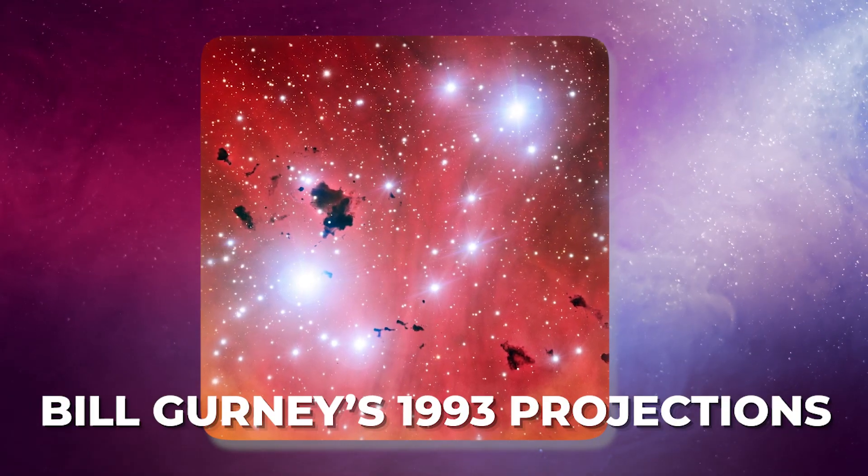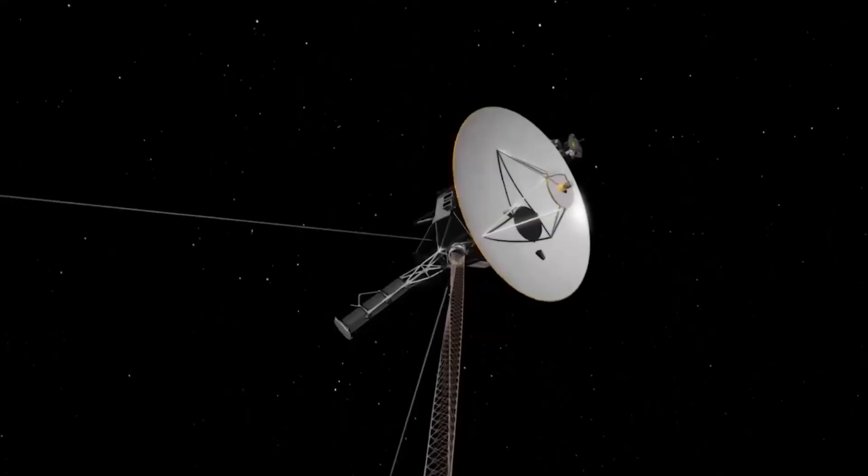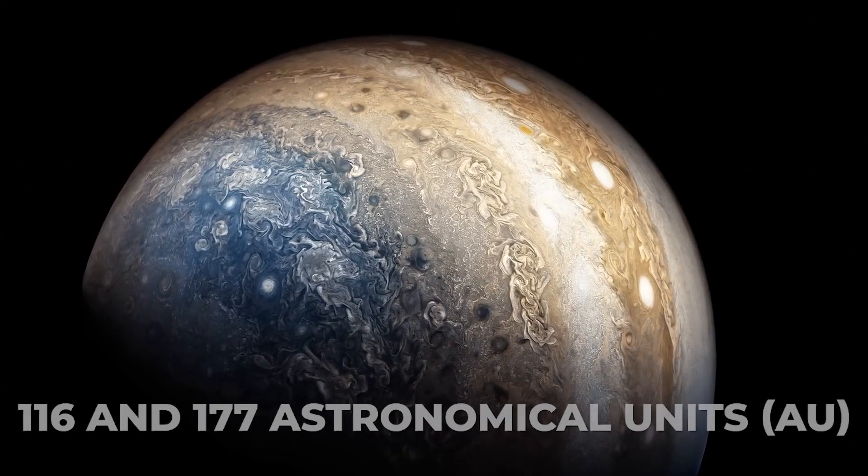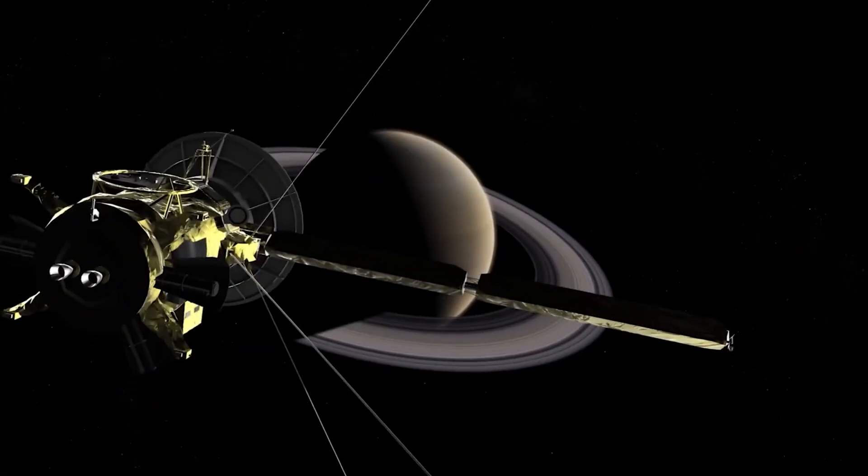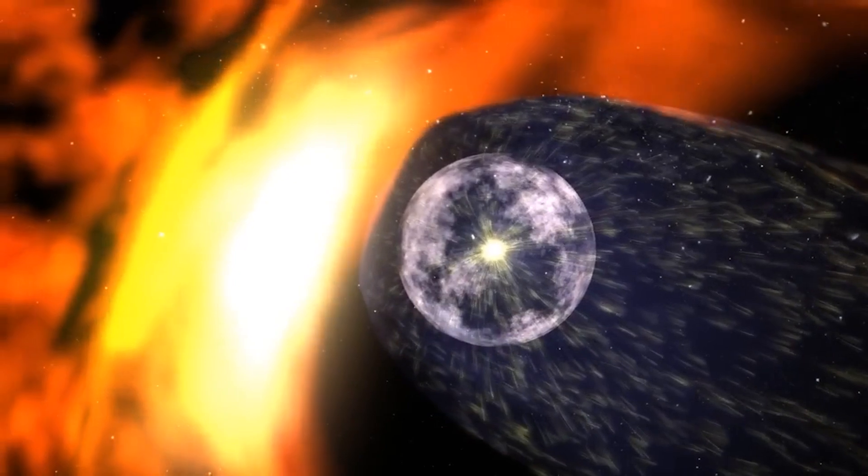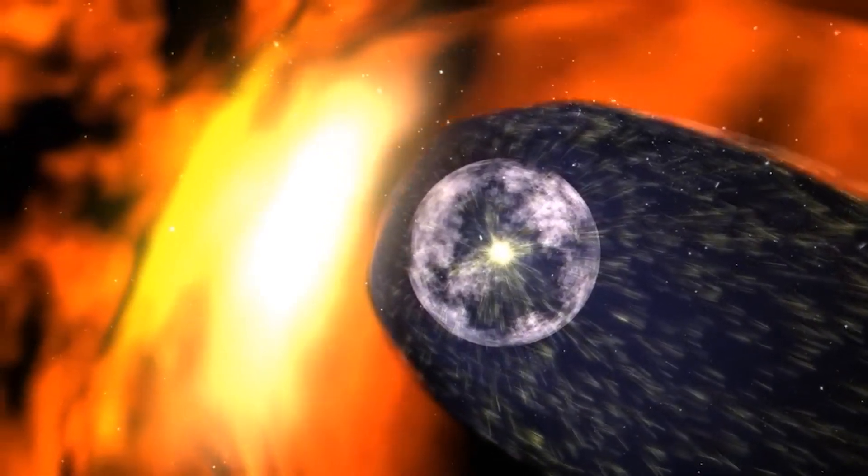But astronomer Bill Webber's 1993 projections, placing it between 116 and 177 astronomical units, proved remarkably accurate. Voyager 1 confirmed these estimates two decades later, detecting the anticipated rise in plasma density at the Heliopause.